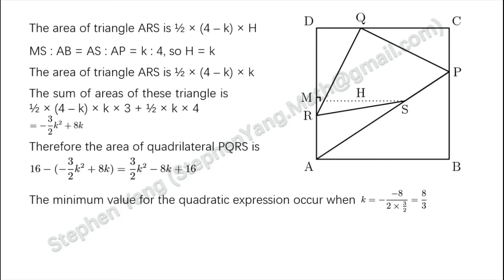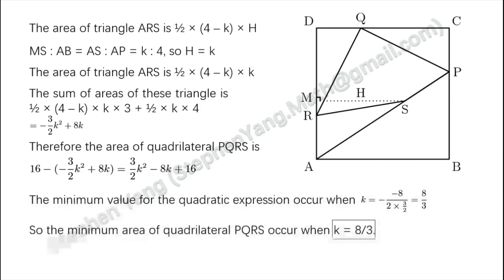The minimum value for this quadratic expression occurs when K equals negative B over 2A, which equals 8 over (2 times three halves), and that equals 8 over 3. So the minimum area of quadrilateral PQRS occurs when K equals 8 over 3, and 8 over 3 is our answer.